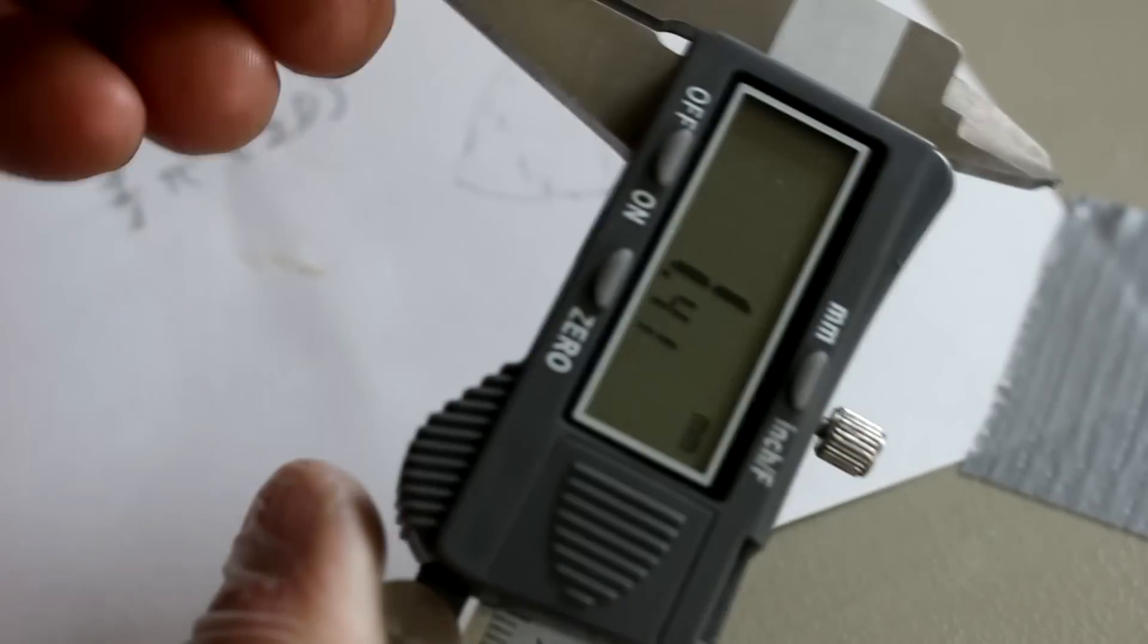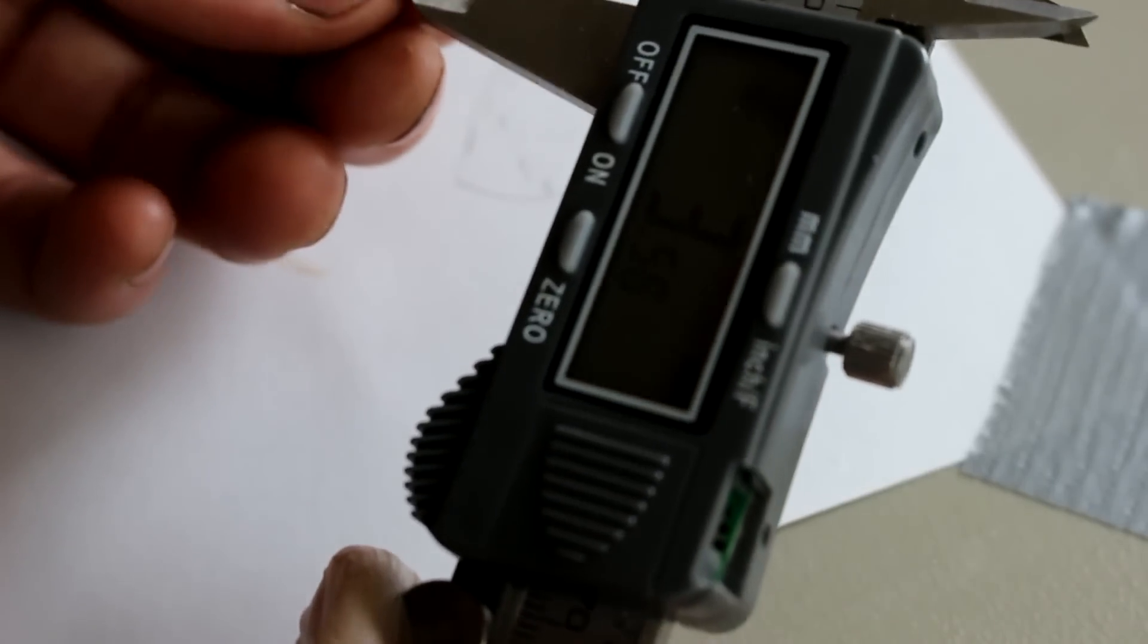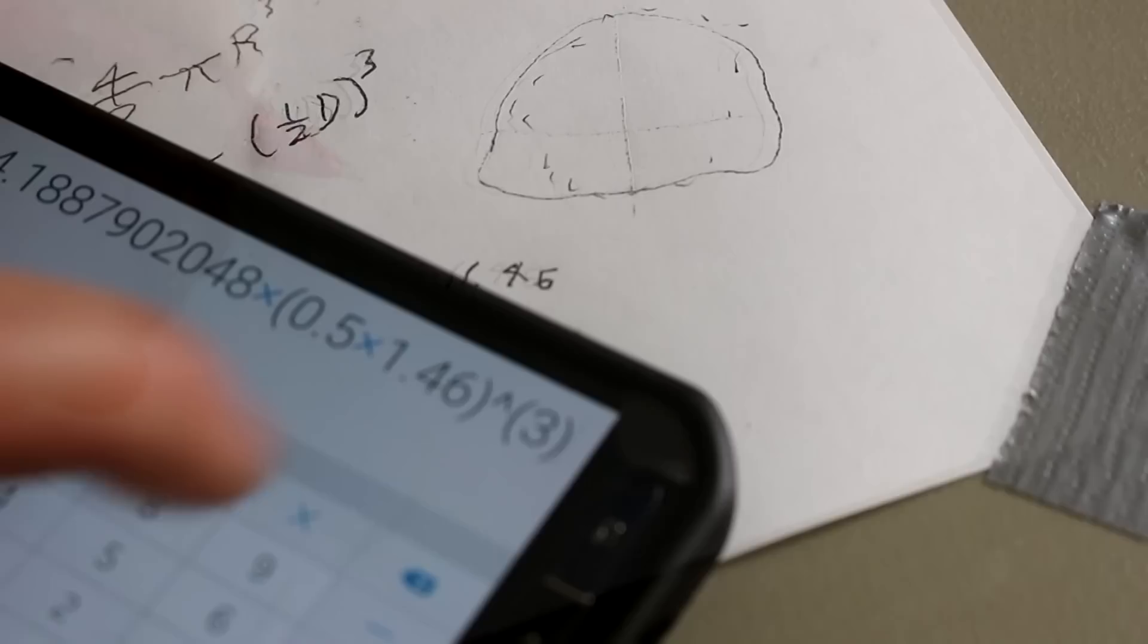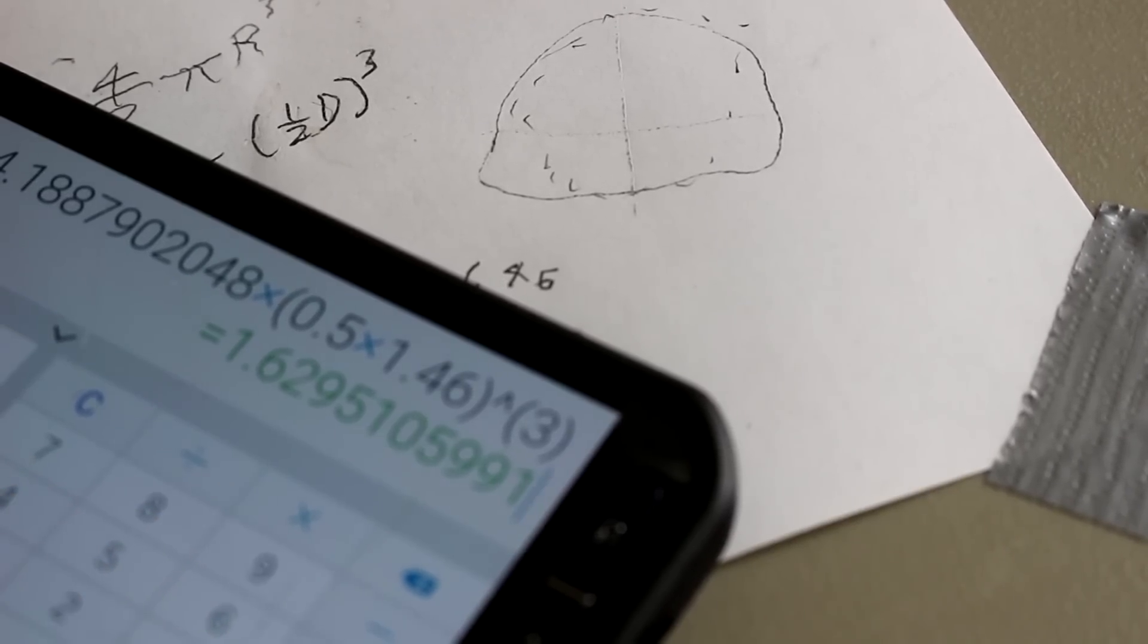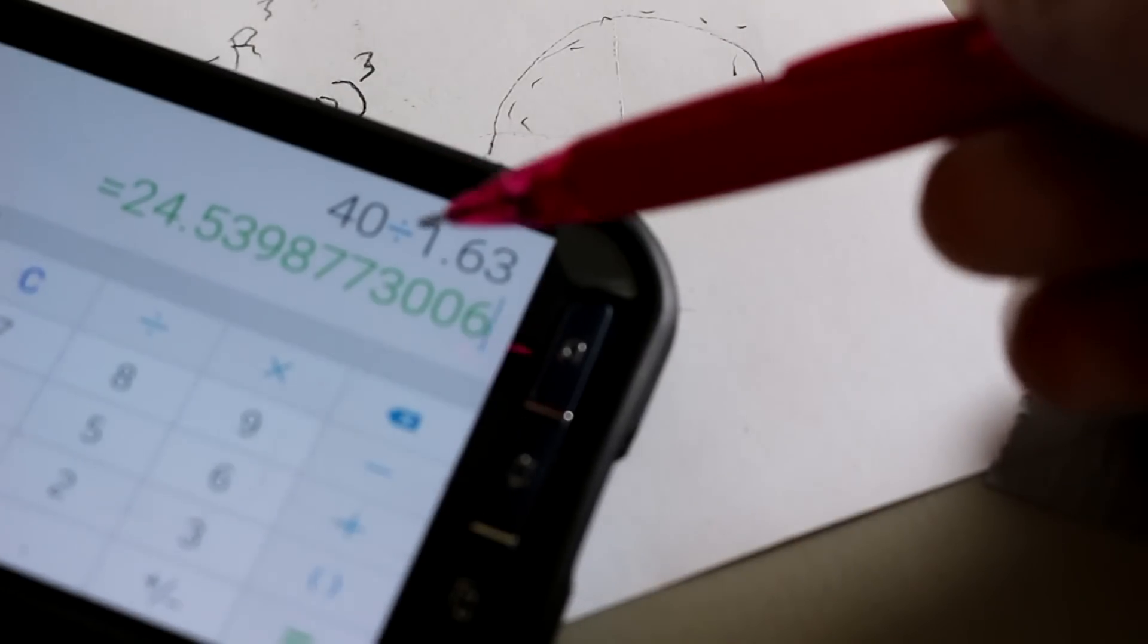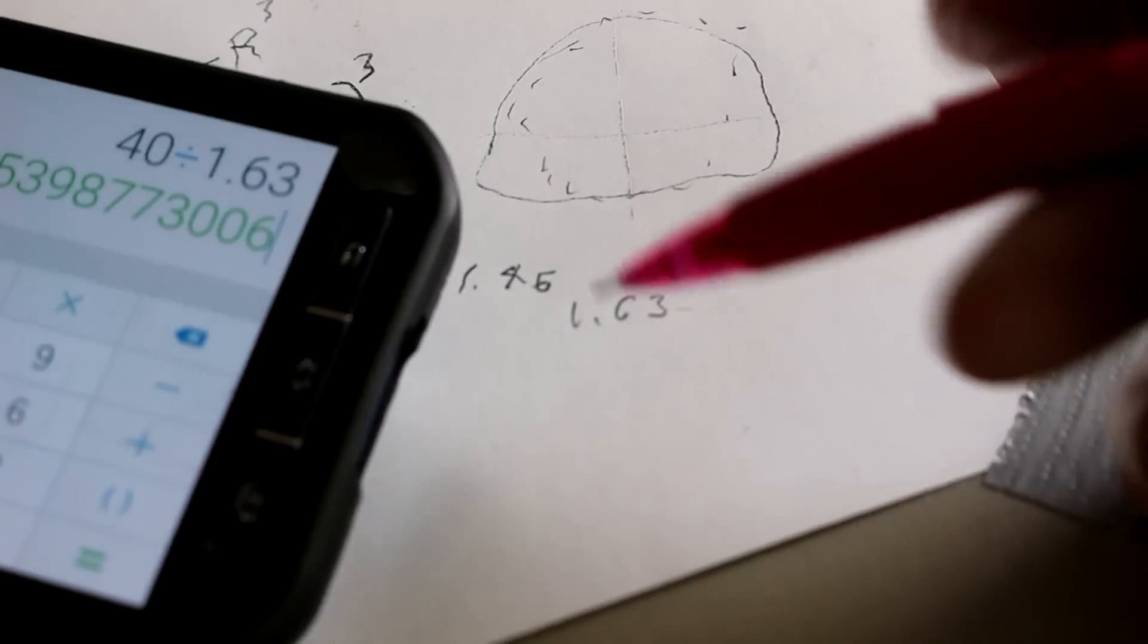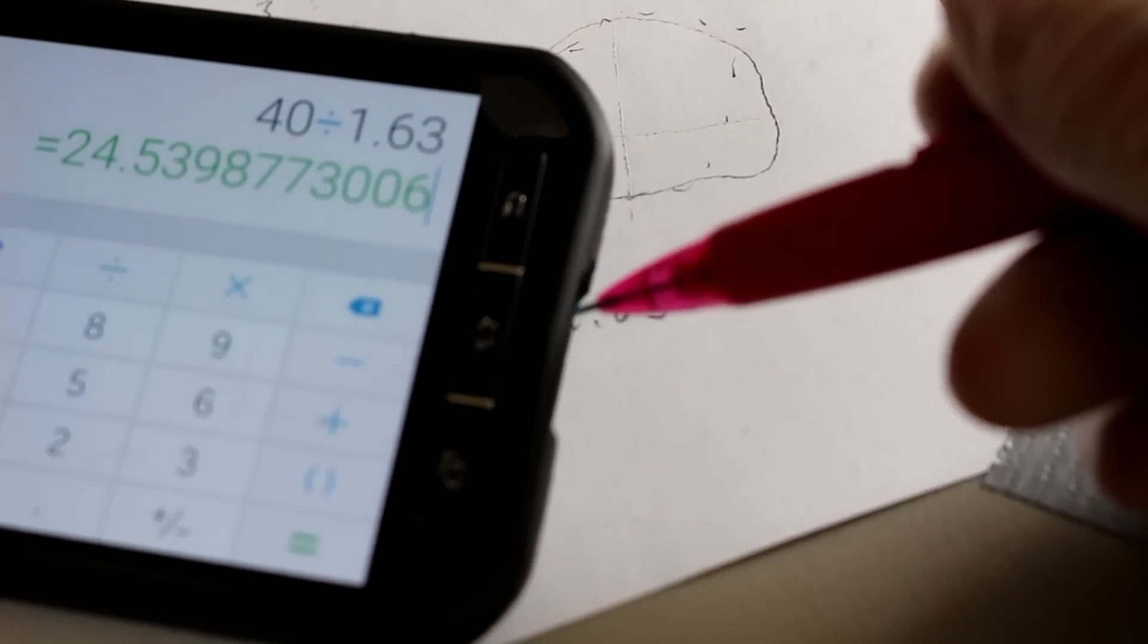1.42 and the large diameter looks like 1.50. Averaging those two numbers we get 1.46. Plugging that into our equation and we get 1.629 cubic millimeters. Dividing the 40 milligrams by 1.63 cubic millimeters gives us 24.5 grams per cubic centimeter.